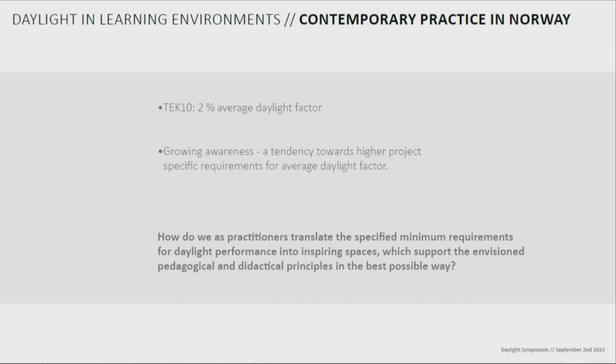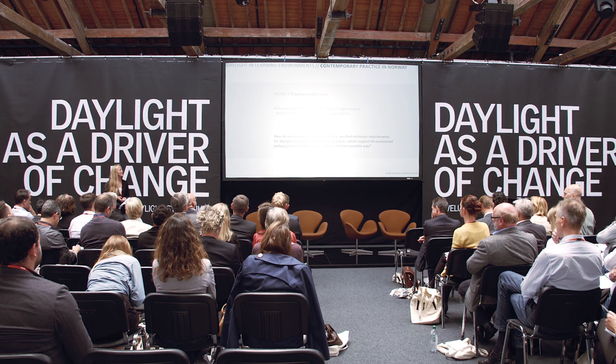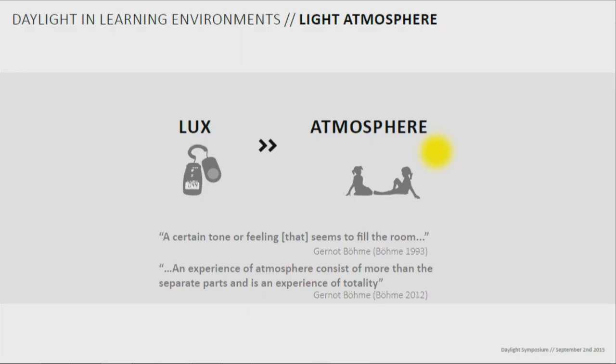As practitioners in Norway, we see a growing awareness and interest amongst clients and a tendency towards higher project-specific requirements. My focus here is to ask how we, as practitioners, translate specified minimum requirements into actually inspiring spaces for students. There are many ways of reaching a specific daylight factor depending on geometry and services — so how do we do that in a way that supports the learning principles of the school? How do we go from talking about daylight as a measurable lux level to a more holistic approach to atmosphere in the classroom?